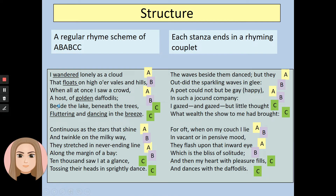This poem has a regular rhyme scheme of ABABCC. I'm going to read out the first stanza: 'I wandered lonely as a cloud that floats on high o'er vales and hills, when all at once I saw a crowd, a host of golden daffodils, beside the lake, beneath the trees, fluttering and dancing in the breeze.' The rhyming happens at the end of each line. 'Cloud' (A) rhymes with 'crowd' (A), 'hills' and 'daffodils' are the B rhymes.